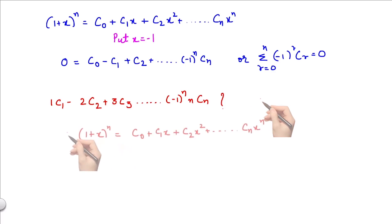We will start from the expansion of (1+x)^n and then differentiate with respect to x. We get the following series.